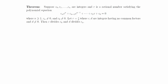Let r = c/d where c and d are integers having no common factors and d ≠ 0. Then c divides c₀ and d divides cₙ.